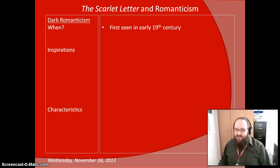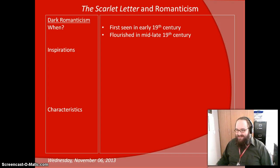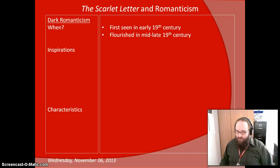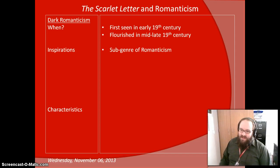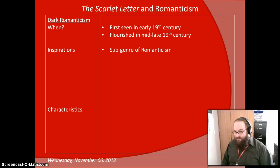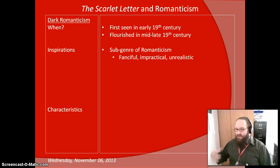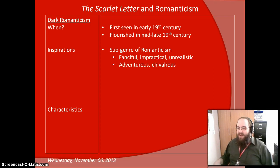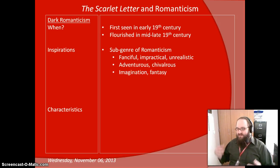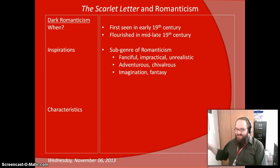When was Dark Romanticism popular? It was first seen in the early 19th century, both in the United States and in Europe, but it really didn't start to flourish until the mid to late 19th century. Transcendentalism and pure Romanticism really dominated before that, and it wasn't until Transcendentalism had run its course that Dark Romanticism started to take over. It's a sub-genre of the larger genre of Romanticism, which deals with the fanciful, the impractical, the unrealistic views of the world. Romantic stories are often adventurous and deal with chivalry, imagination, and fantasy. Remember, Romanticism is kind of the antithesis to realism.